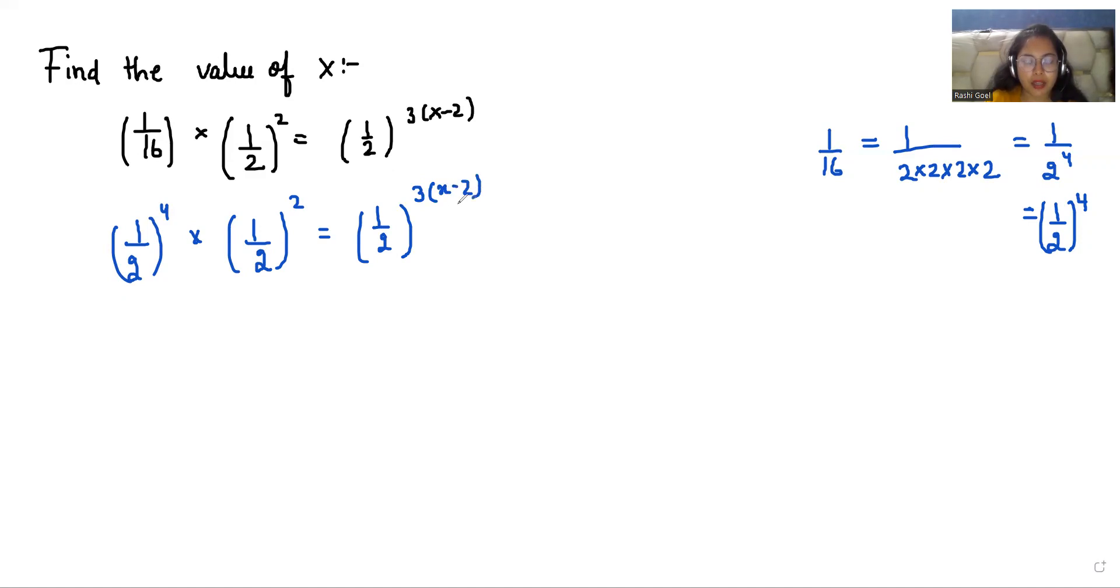Now we know the rule of product: a^m × a^n = a^(m+n). So I'm going to use this on the left-hand side.